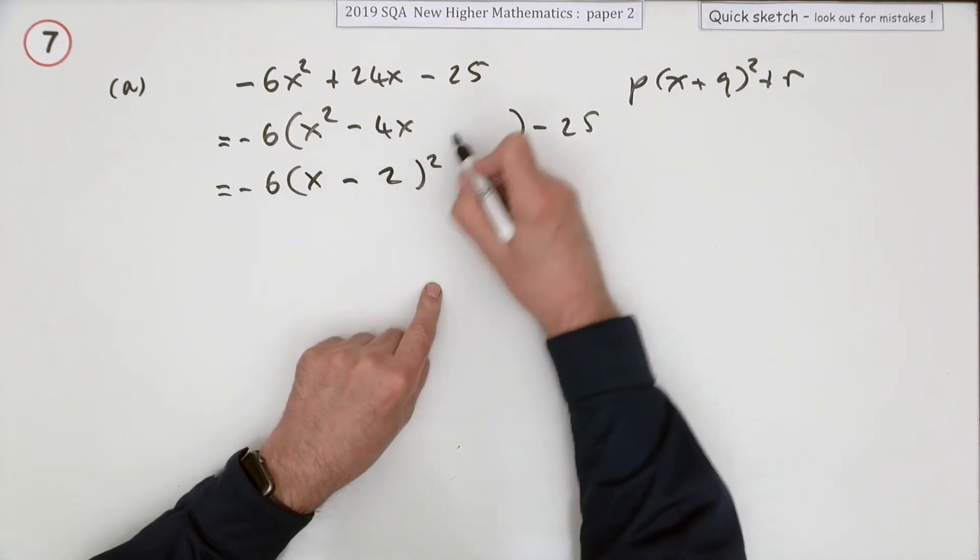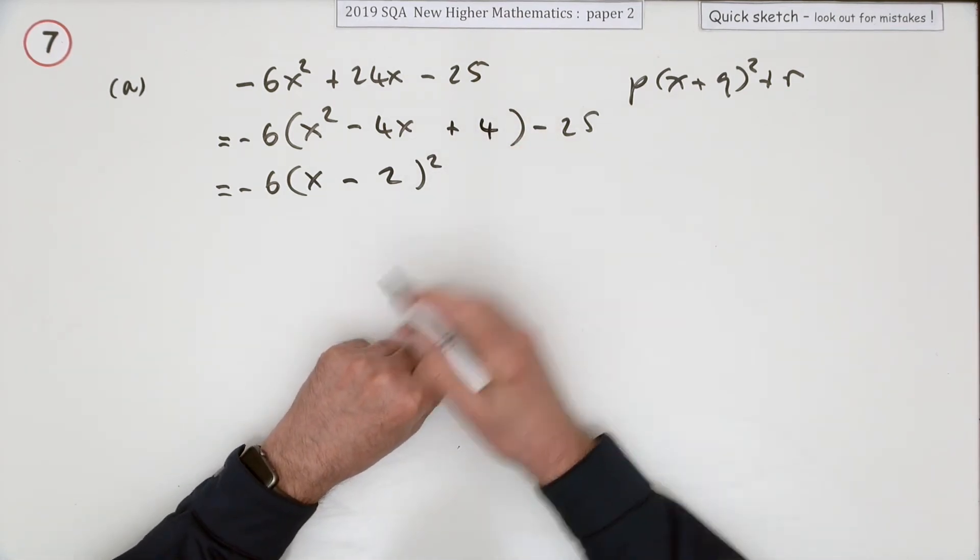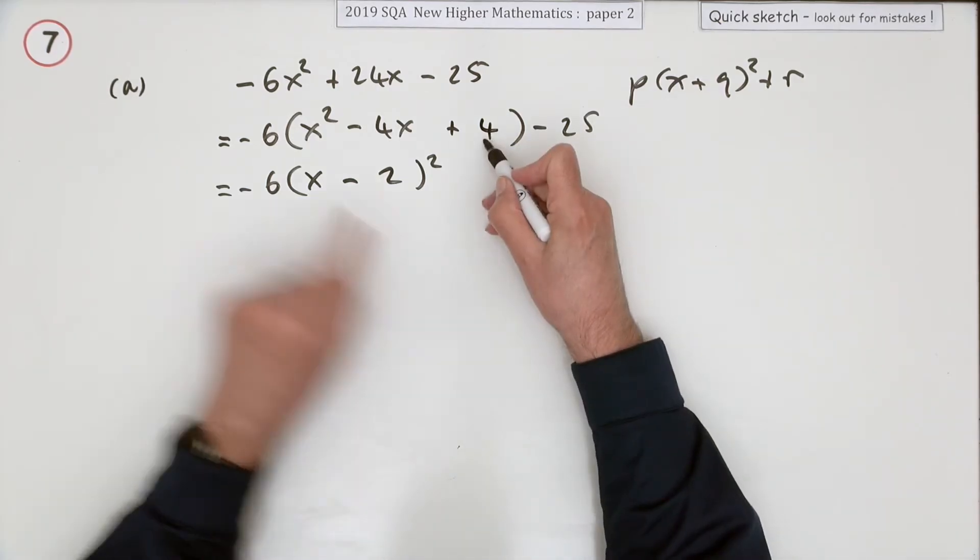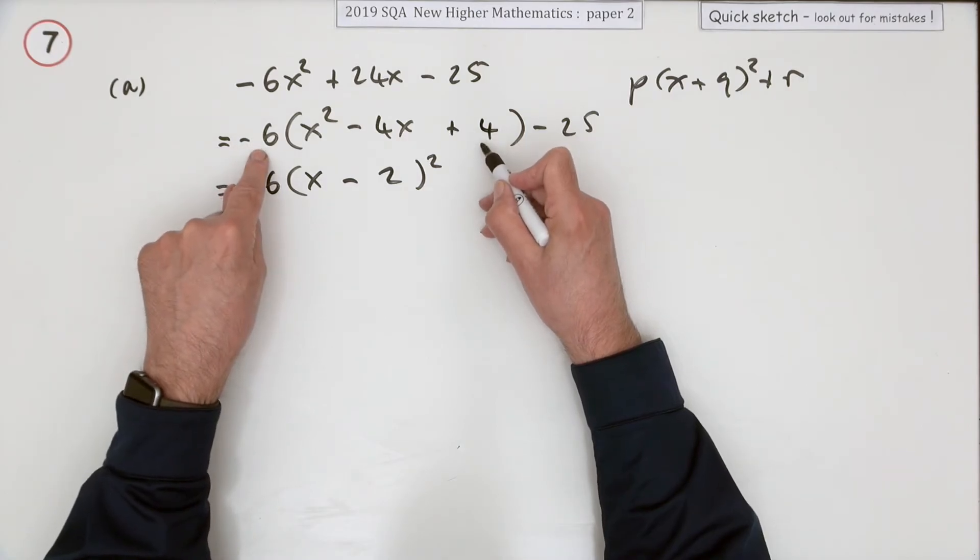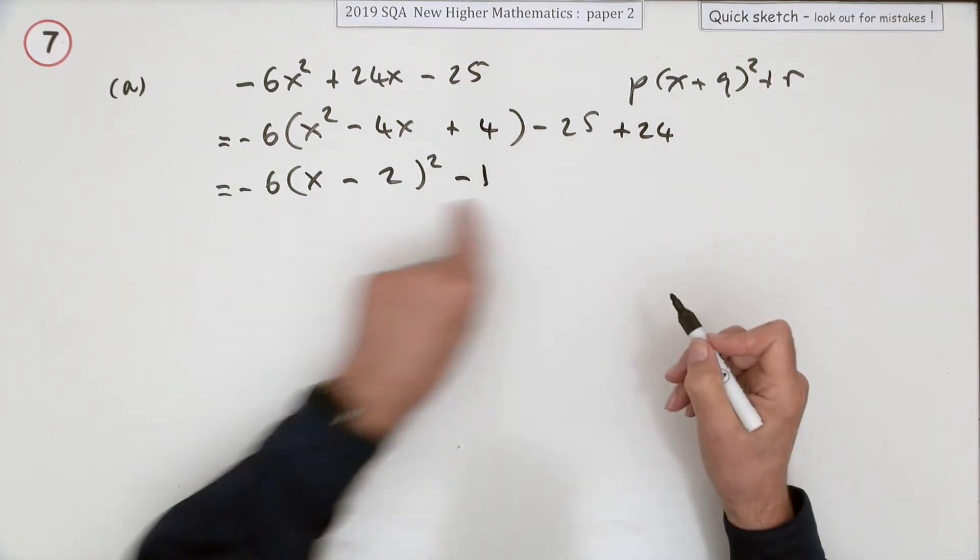Now that you know that's minus 2, squaring it means it would have had a plus 4 that wasn't there, so I'll need to correct for it. It wasn't just that that wasn't there, it was negative 6 times it, so there's a negative 24 that shouldn't be there. You can correct for it by adding on 24, which means the final answer is negative 6(x - 2)^2 - 1.